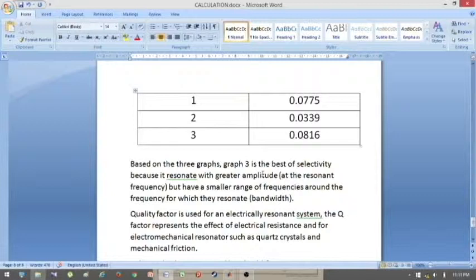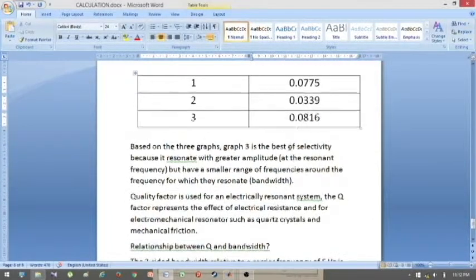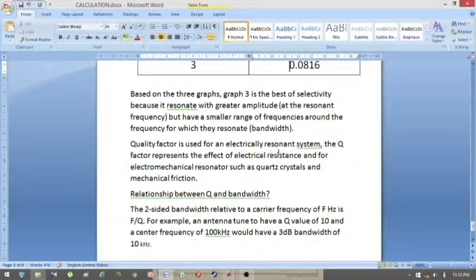Now we are going to compare. This is the quality factor for graph 1, quality factor for graph 2 and 3. Based on the three graphs, graph 3 is the best selectivity because it is resonant with greater amplitude at the resonant frequency but have a smaller range of frequency around the frequency for which they resonate. That is the bandwidth. Graph 3 has the highest quality factor, which is good. Quality factor is used for an electrical resonance system. The Q factor represents the effect of electrical resistance and for electromechanical resonators such as quartz crystal and mechanical friction.